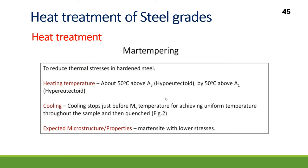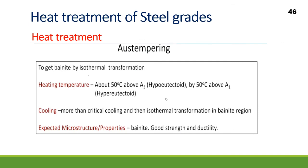Martempering is a special technique used to reduce thermal stresses in hardened steel. In martempering, the cooling stops just before the Ms (martensite start) temperature to achieve a uniform temperature throughout the sample, and then the sample is quenched into the martensitic transformation zone. The expected microstructure is martensite with lower residual stress.